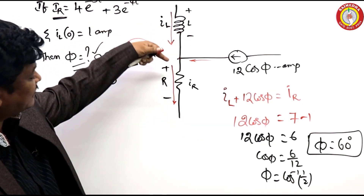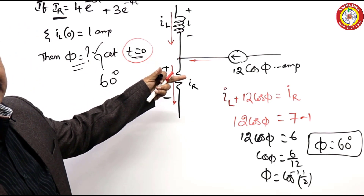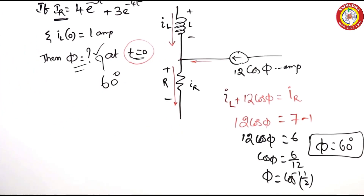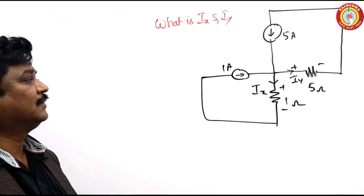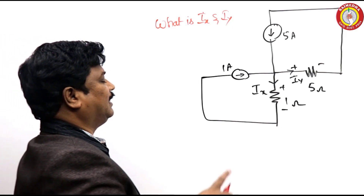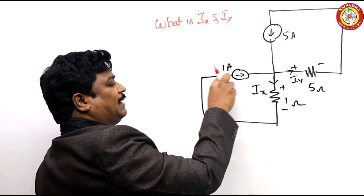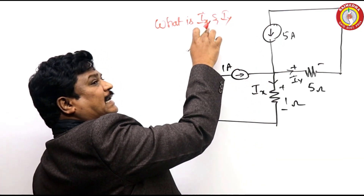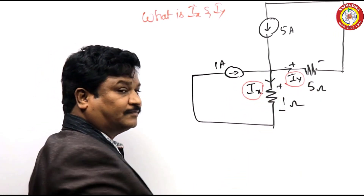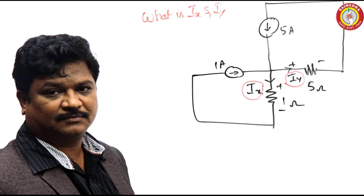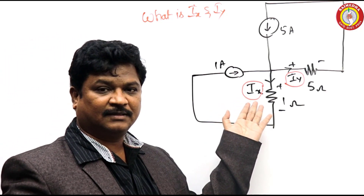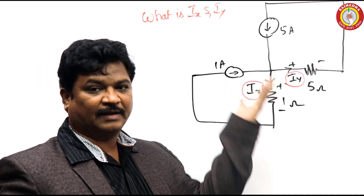Why should I consider this one? Because plus 2 minus passive element. Here is another simple model problem. Here 5 amperes is incoming, 1 ampere is outgoing. What is the question? Determine Ix and Iy. What is Ix? 1 ampere. What is Iy? 5 amperes.